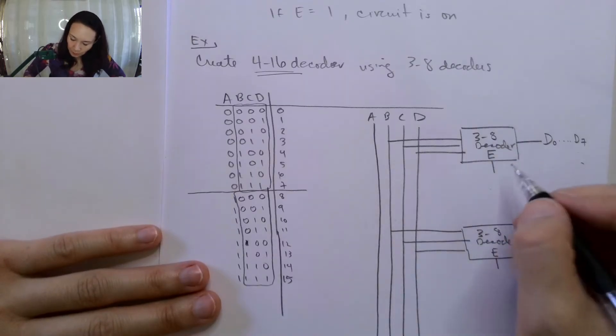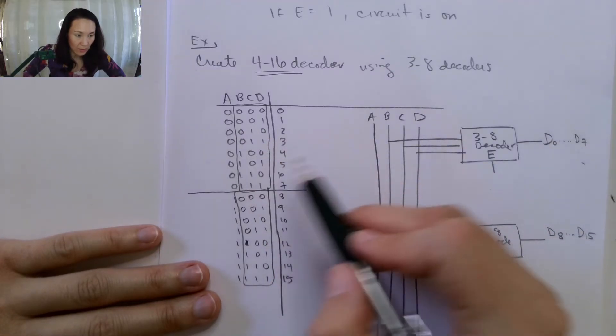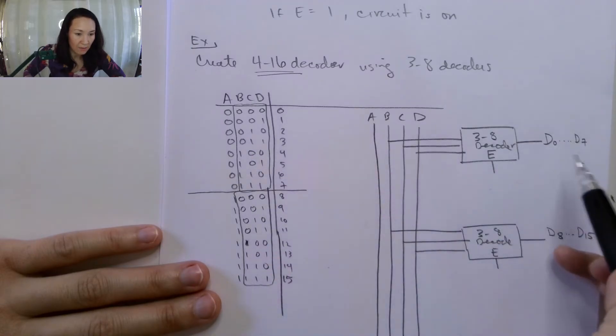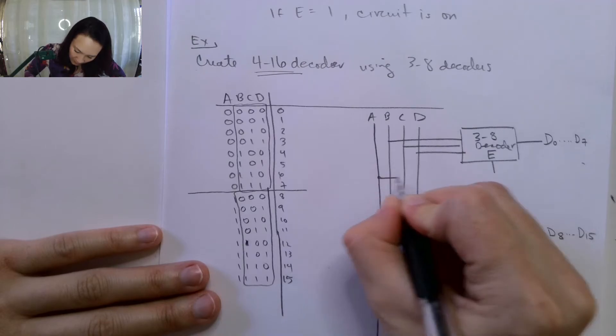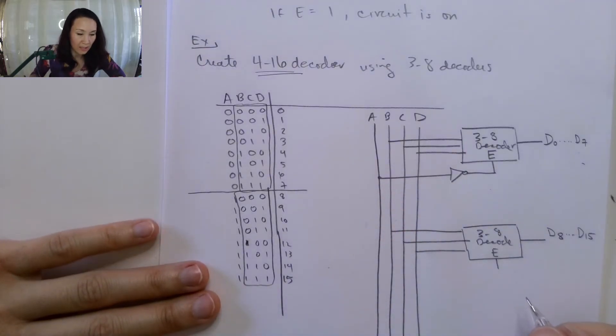In order for this decoder to be on, I want A to be 0. So if A is 0, it'll make my first decoder on and output 0 to 7 decimal digits on my output. So in order for this to have a 1 when A is equal to 0, I can grab A, invert it, and then route it to my enable line.